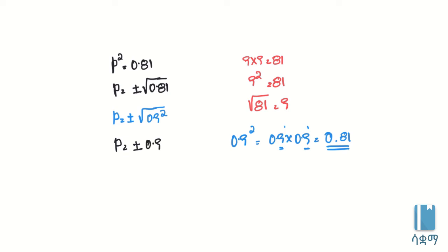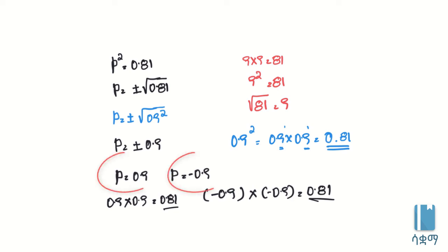This is equal to minus square root of 0.09 squared. Here we can see that P is positive 0.09. P is negative 0.09. That is equal to which will be positive and negative.